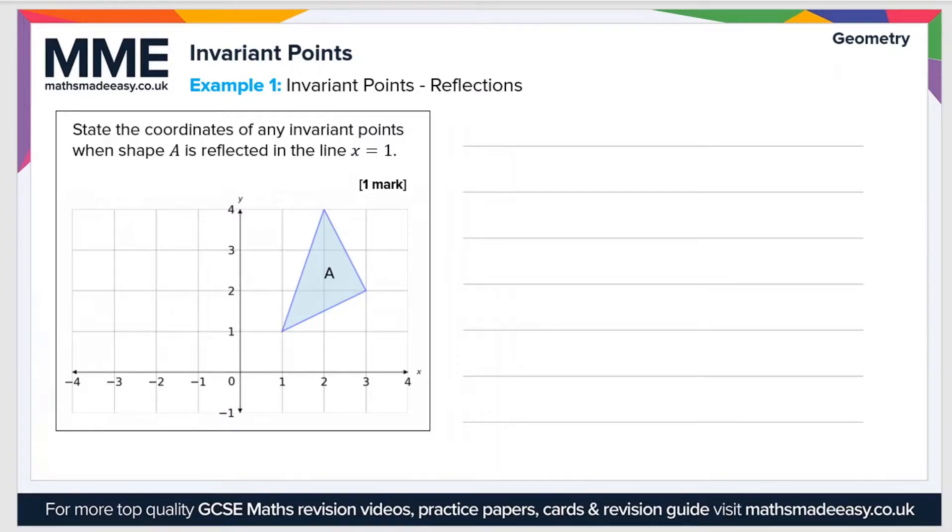Well, let's first of all draw the line x equals 1. So x equals 1 is here. So in the line x equals 1, all of the x coordinates are 1. And then if we reflect the shape, let's do it point by point.